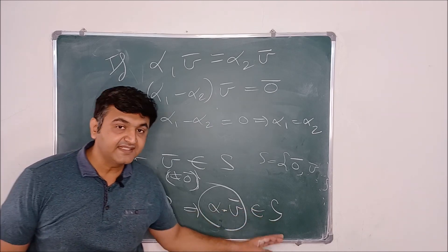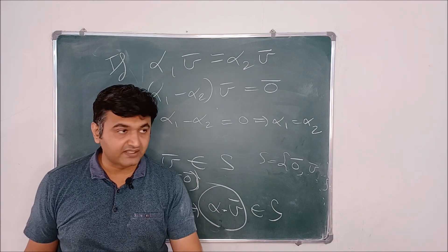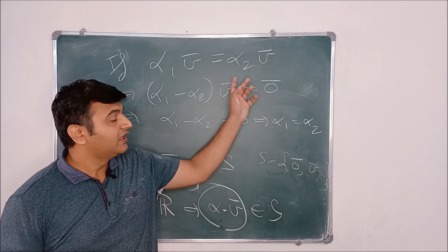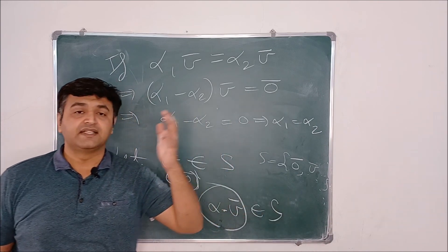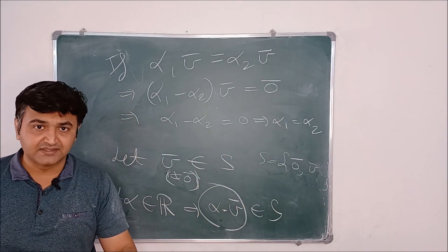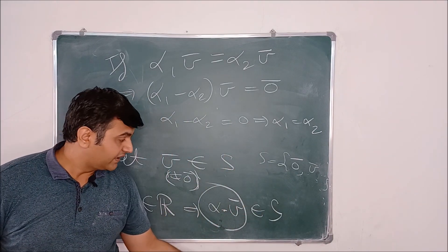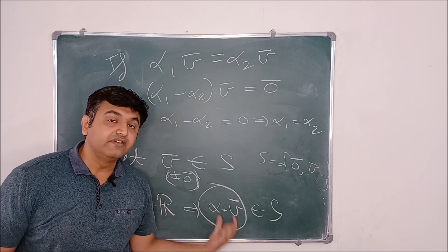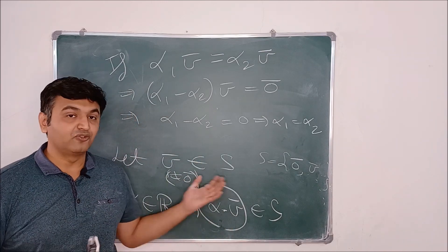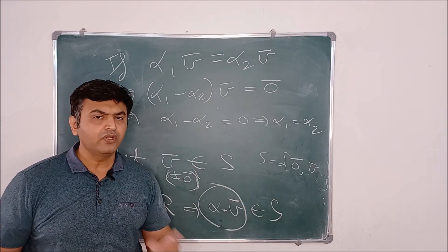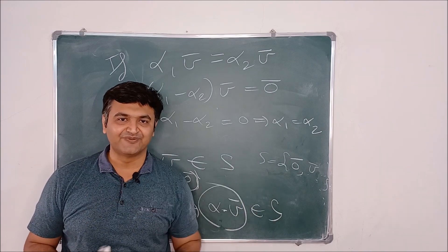Therefore, if S is a non-zero subspace of V, where V is a vector space over the real numbers, complex numbers, or rational numbers, then that non-zero subspace can never be finite — it will always have infinitely many vectors. I hope this is clear. If you have any doubts, you can ask me in the comment section. Thank you.